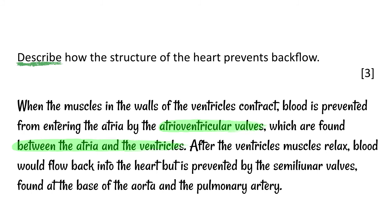After the ventricles have contracted and then relaxed, blood would flow back into the heart, but this is prevented by the presence of the semilunar valves. You might also get a mark for stating where these are located — at the base of the aorta and the pulmonary artery. So there are four possible points, and for a three-mark question you can easily achieve all three marks.